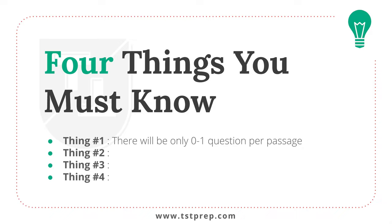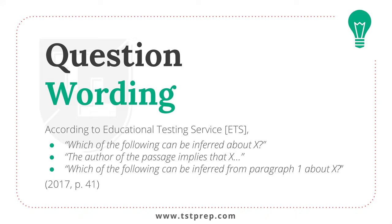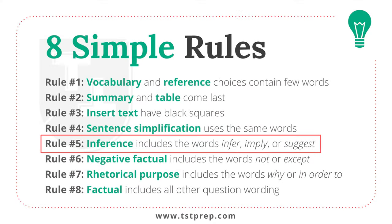Here are four things you must know about TOEFL reading inference questions. First, you'll get zero to one inference question per passage — they're not so common, probably about three in the entire reading section. Second, try to answer in 90 seconds or less. Third, the question wording will always include 'infer,' 'imply,' or 'suggest.' Fourth, inferences are not directly stated in the passage. Here are examples of popular question wording: 'Which of the following can be inferred about...', 'The author of the passage implies that...', 'Which of the following can be inferred from paragraph one about...'